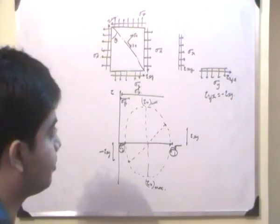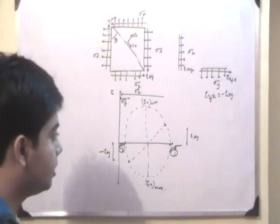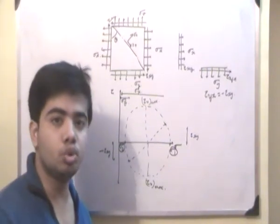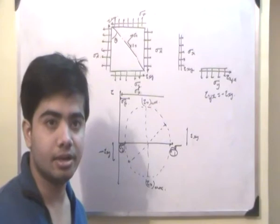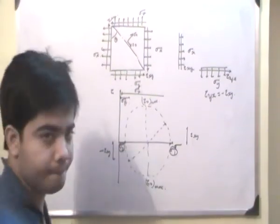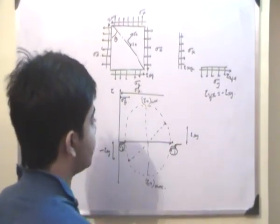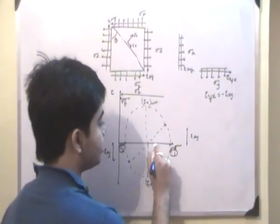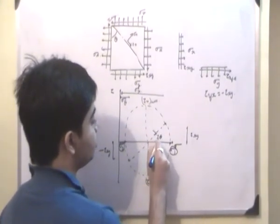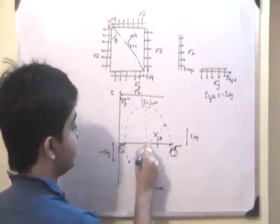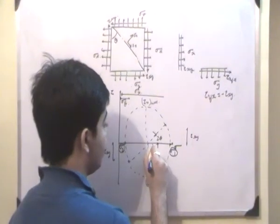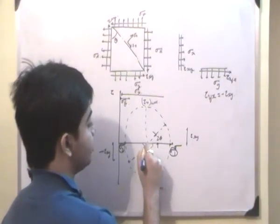As observed in the previous lecture, the principal planes are at an angle of 2 theta and 2 theta plus 180 degrees with respect to the x and y planes. So if this is the x-plane, then the principal plane corresponding to sigma-1 will be at an angle of 2 theta on the Mohr's circle. The plane where the minimum normal stress occurs will be at an angle of 180 degrees with respect to that plane on the circle.